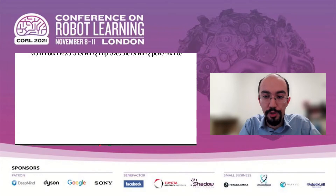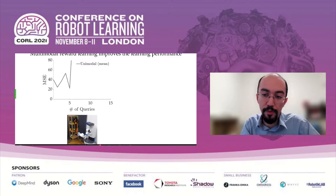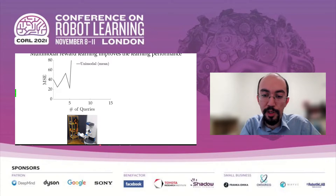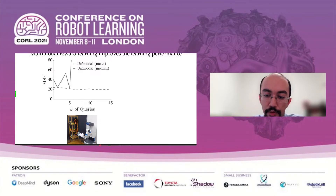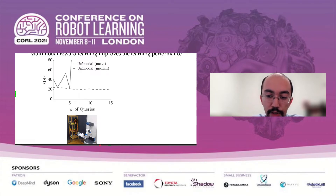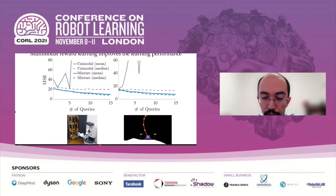Let me show you some simulation results. On this fetch robot task with bimodal data, we observed that modeling the reward as a unimodal function failed terribly. There were many outliers because the robot was trying to come up with one mode that explains all data; we had to plot the median error to get nicer graphs. On the other hand, modeling the reward as a multimodal function using our mixture model gave much better performance in learning, both in terms of mean and median. The results were similar on OpenAI's Lunar Lander, where we again simulated a bimodal reward.